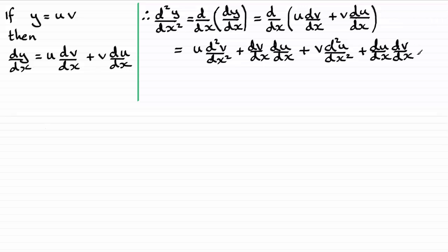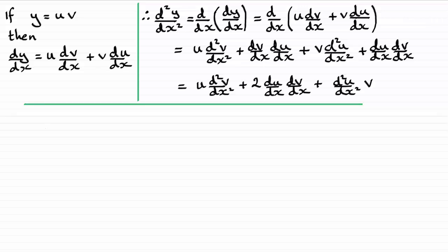Now I just need to group up the terms and simplify. When I do that, the result is: u·d²v/dx², plus two lots of du/dx·dv/dx, plus v·d²u/dx². Notice there are two lots of du/dx·dv/dx, and I've changed the order of the last term — you'll see why later.